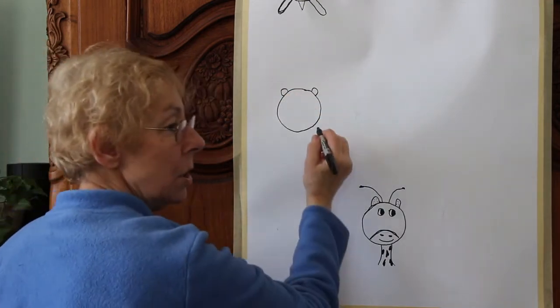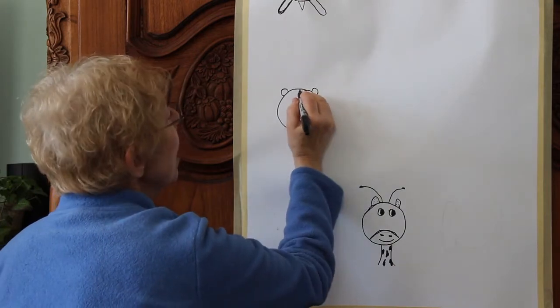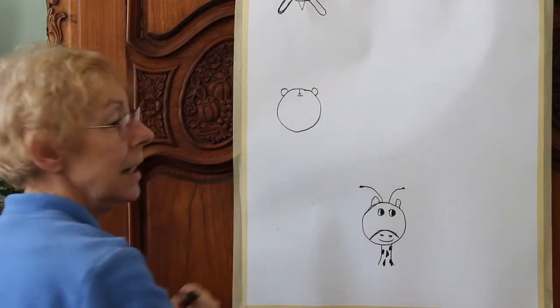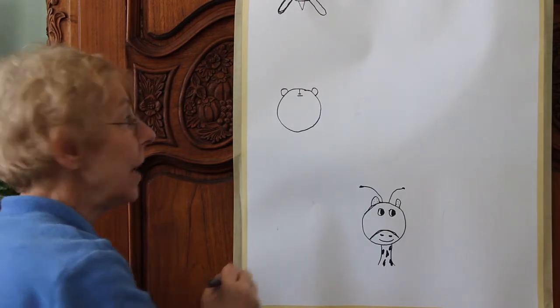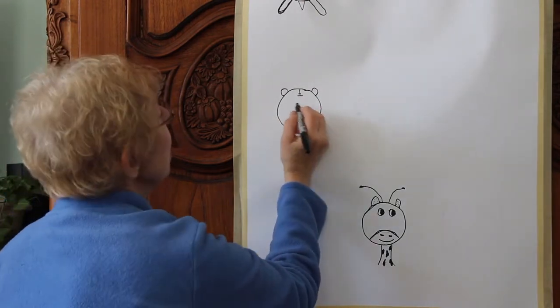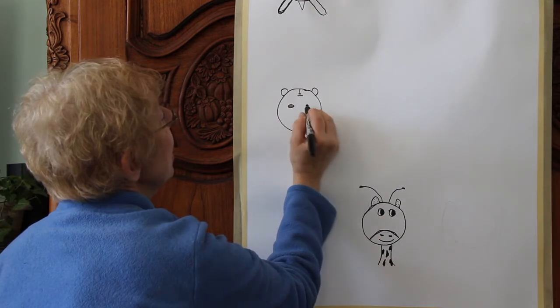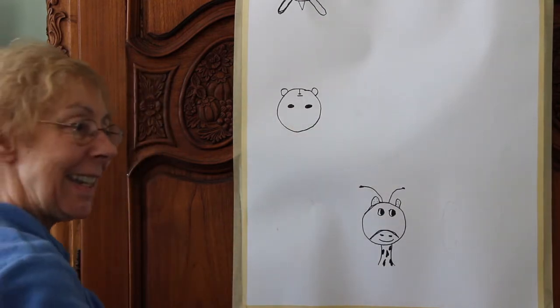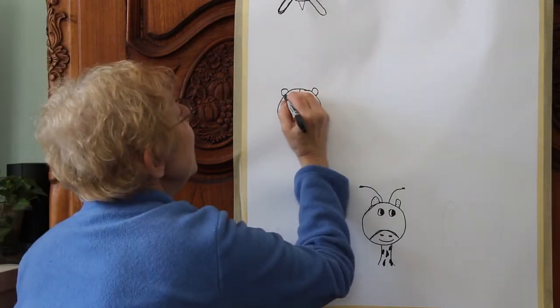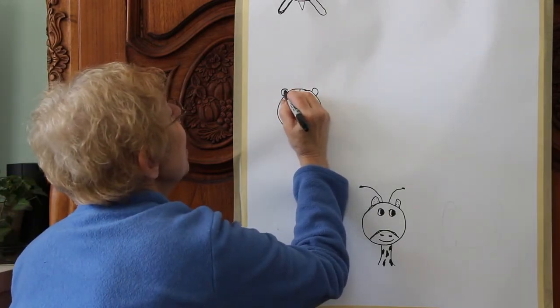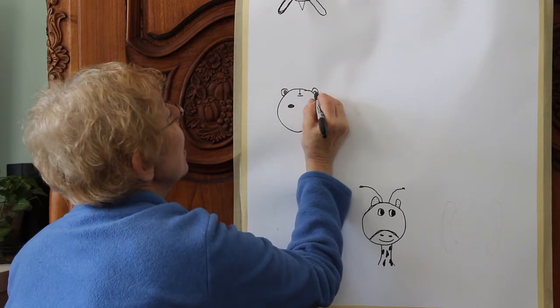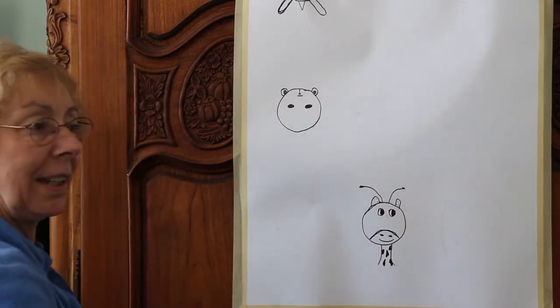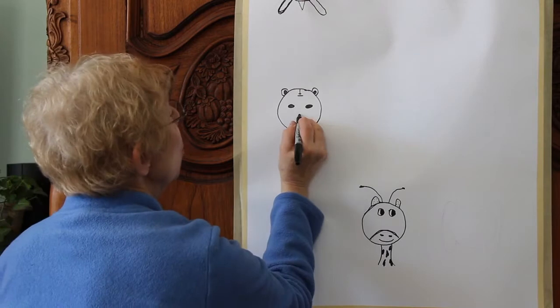The next thing we're going to do is we're going to make a mark on his forehead like this. How about some eyes on this tiger? See how easy this is? Now we're going to fill in the ears of that tiger. How about a nose?